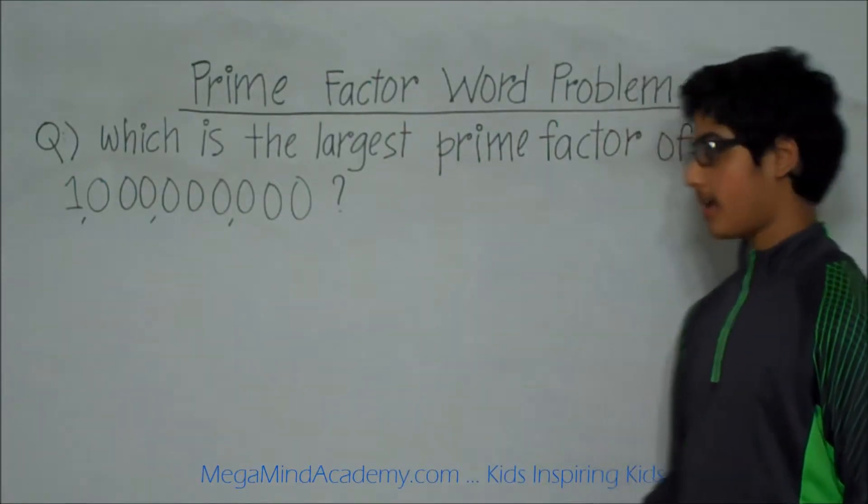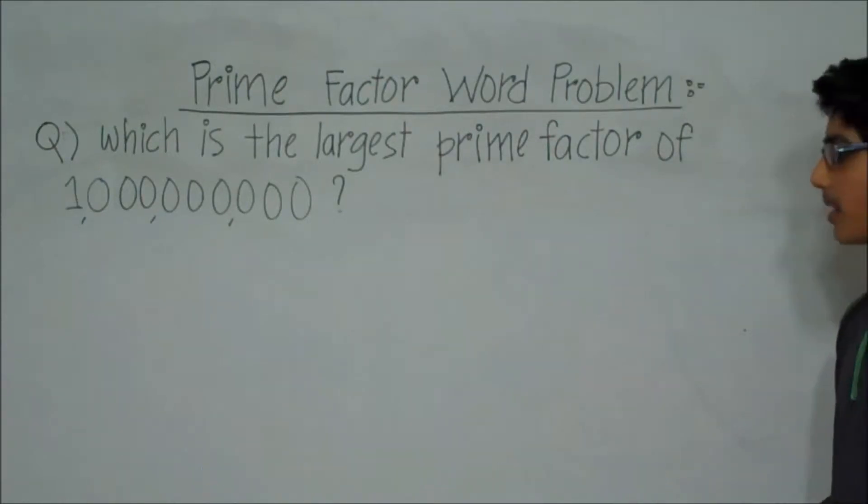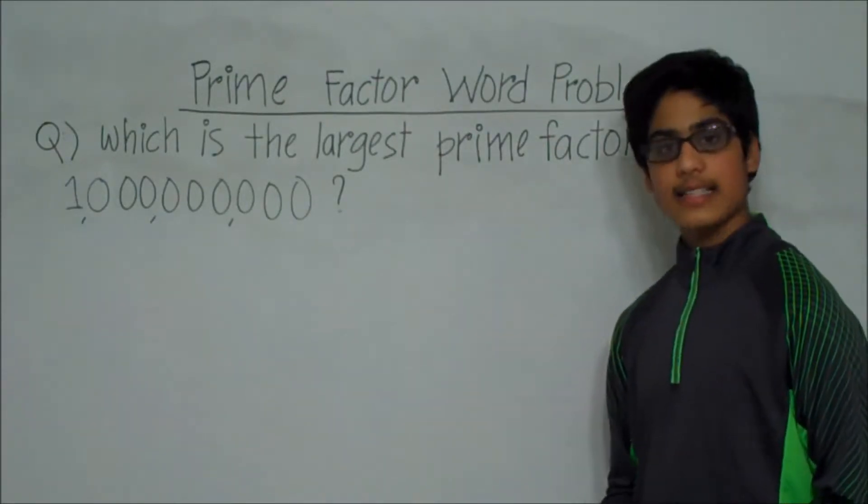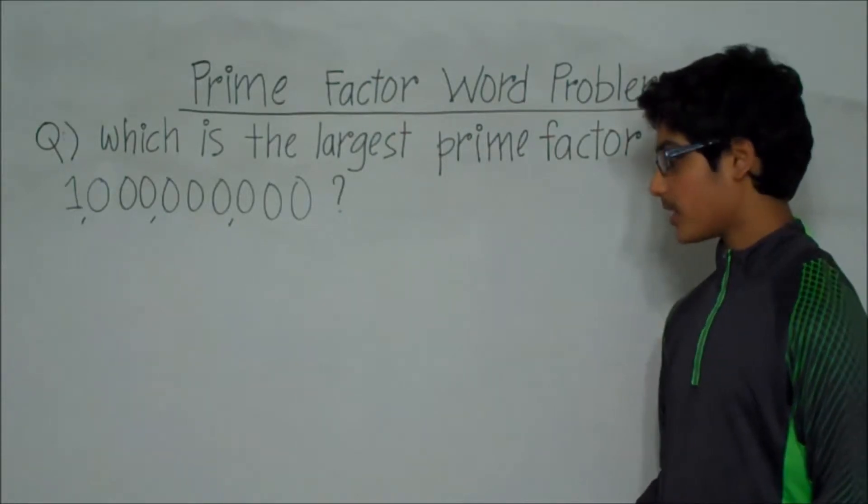A prime number is a number that has only two factors: 1 and the number itself.